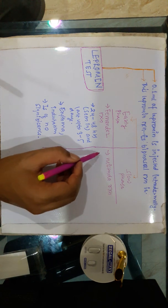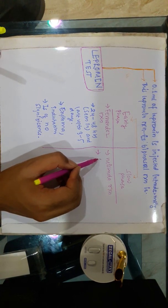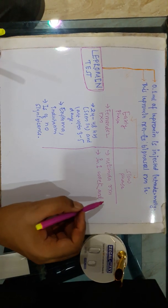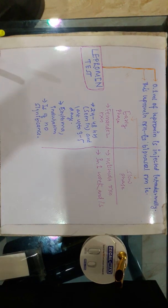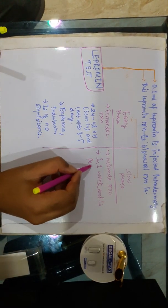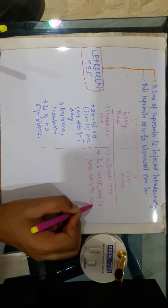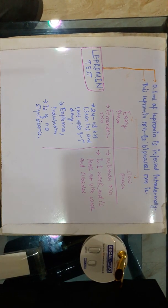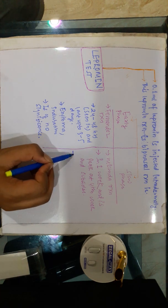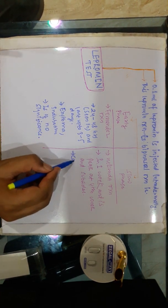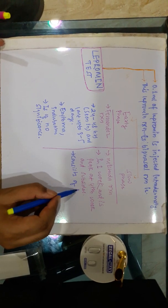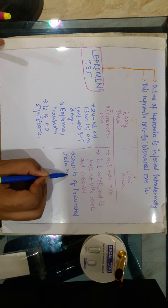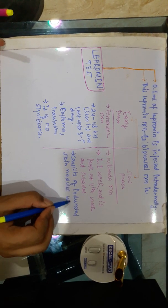The Mitsuda reaction is seen in one week, peaks at the fourth week, and then subsides. This reaction consists of indurated skin nodules.